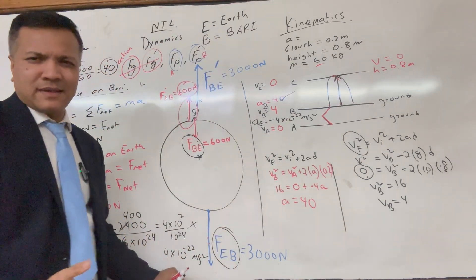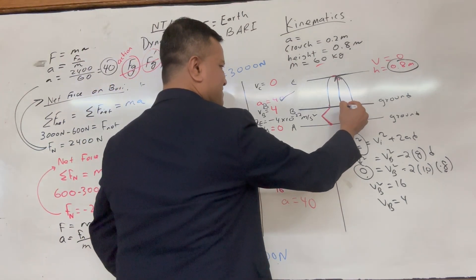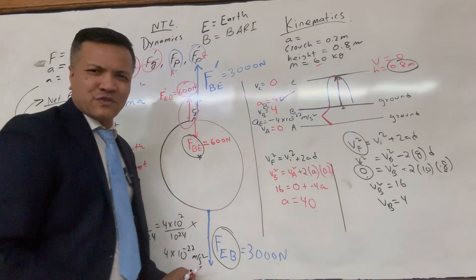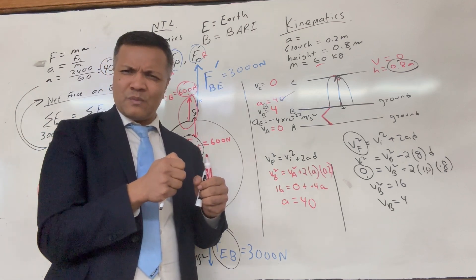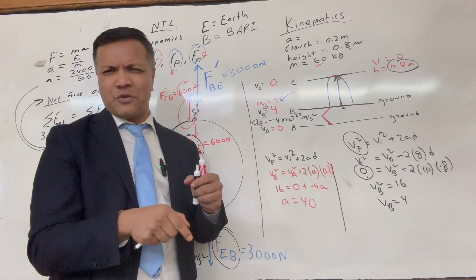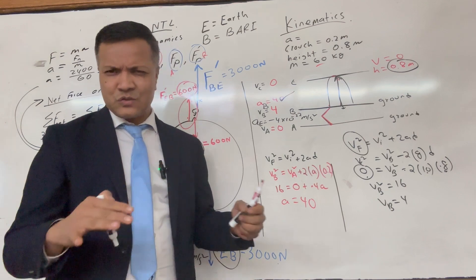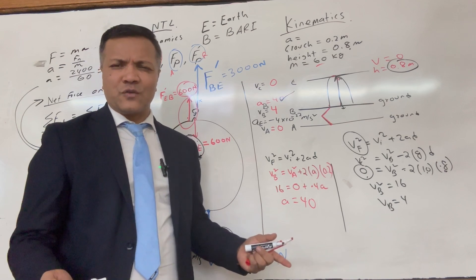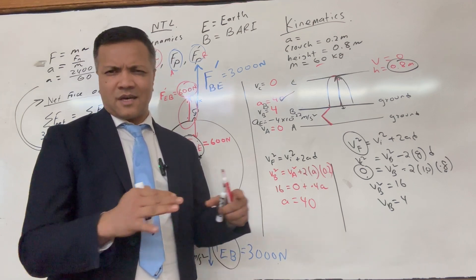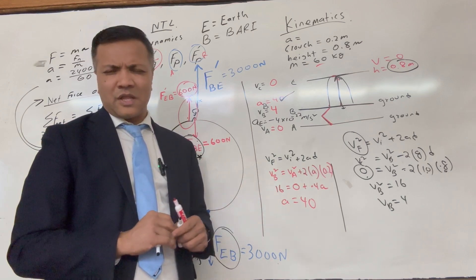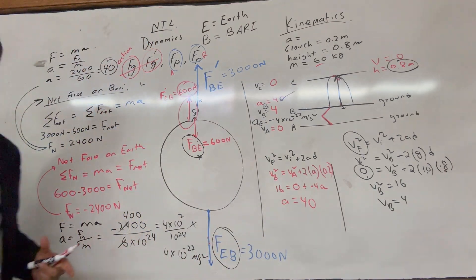Josh moved up by 0.8 meters; on the other hand, Earth moved by almost zero meters. Students often misunderstand — it's not the displacement that is equal and opposite, it's the force. Net force on Josh is 2400 N upward and net force on Earth is negative 2400 N — that's the action-reaction pair. The accelerations and displacements are not the same because their masses differ greatly.